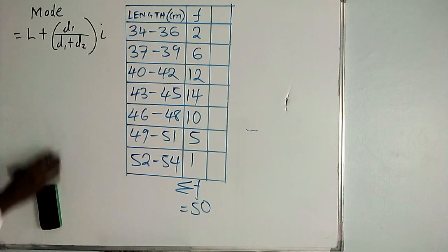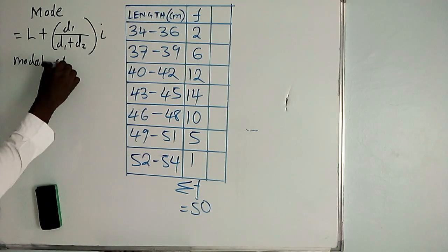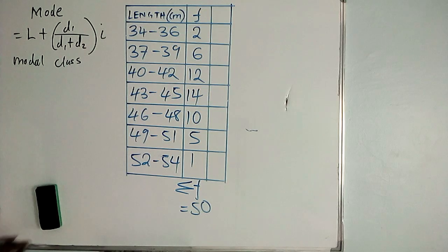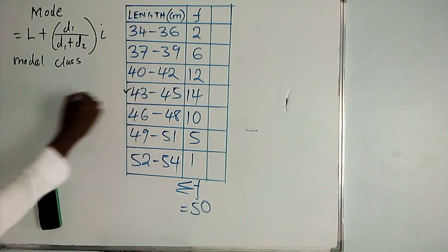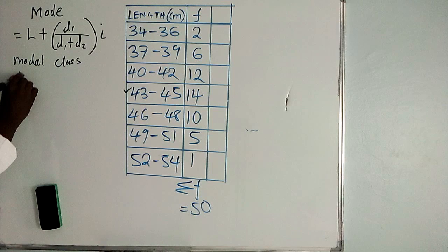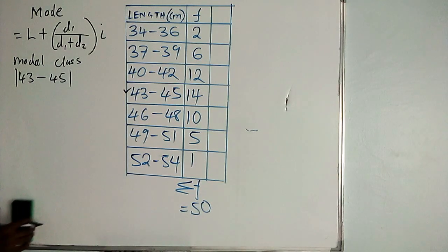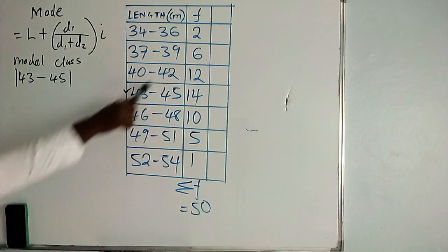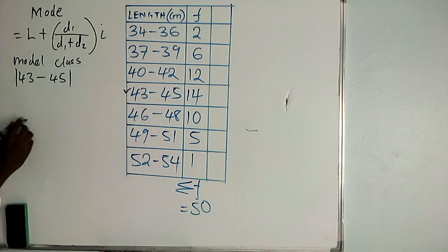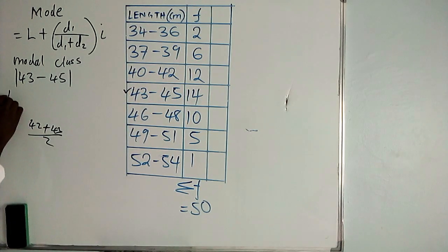The first thing you do is identify the modal class — the class with the highest frequency. The highest frequency is 14, so the modal class is 43 to 45. When identifying the class limits, this class started at 43 and the previous one ended at 42, so the average of 43 and 42 gives you 42.5 as the lower class limit.